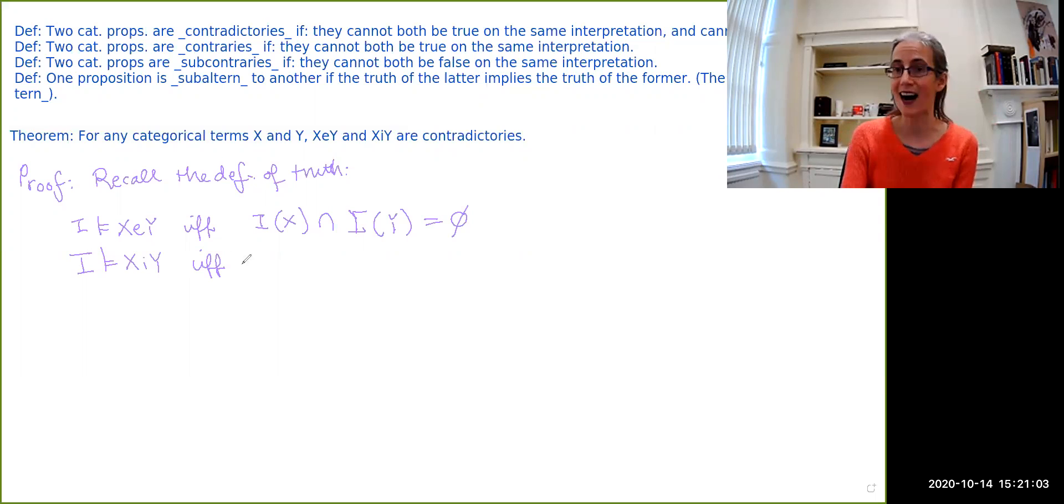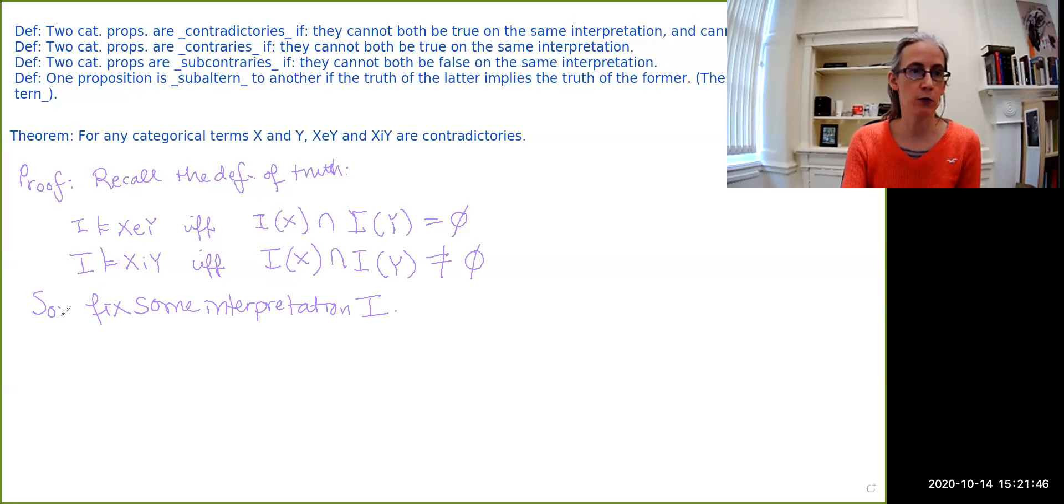Now an interpretation makes x i y true if and only if, if you look at the intersection of the interpretation of x and the interpretation of y, what you have is not empty. That you do have at least one object that is in both of these interpretations. So what we need to show is that these are contradictories, we have to show that they cannot both be true on the same interpretation and they cannot both be false. So fix some interpretation. It doesn't matter what the interpretation is, but just pick one. Pick your favorite interpretation ever.